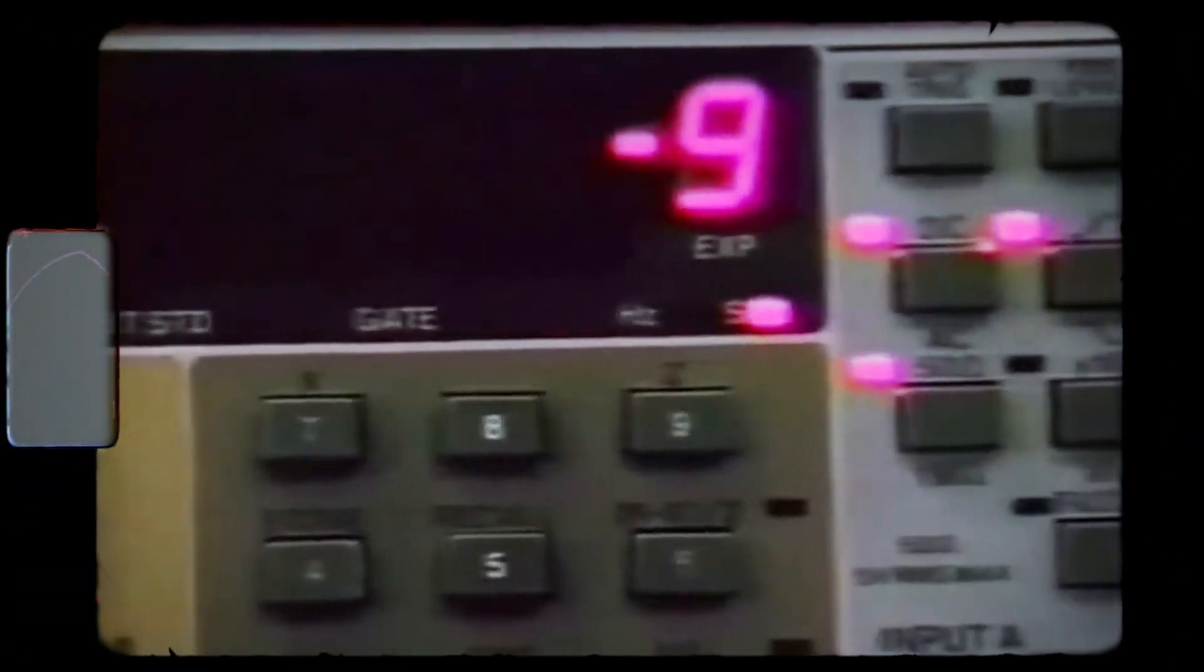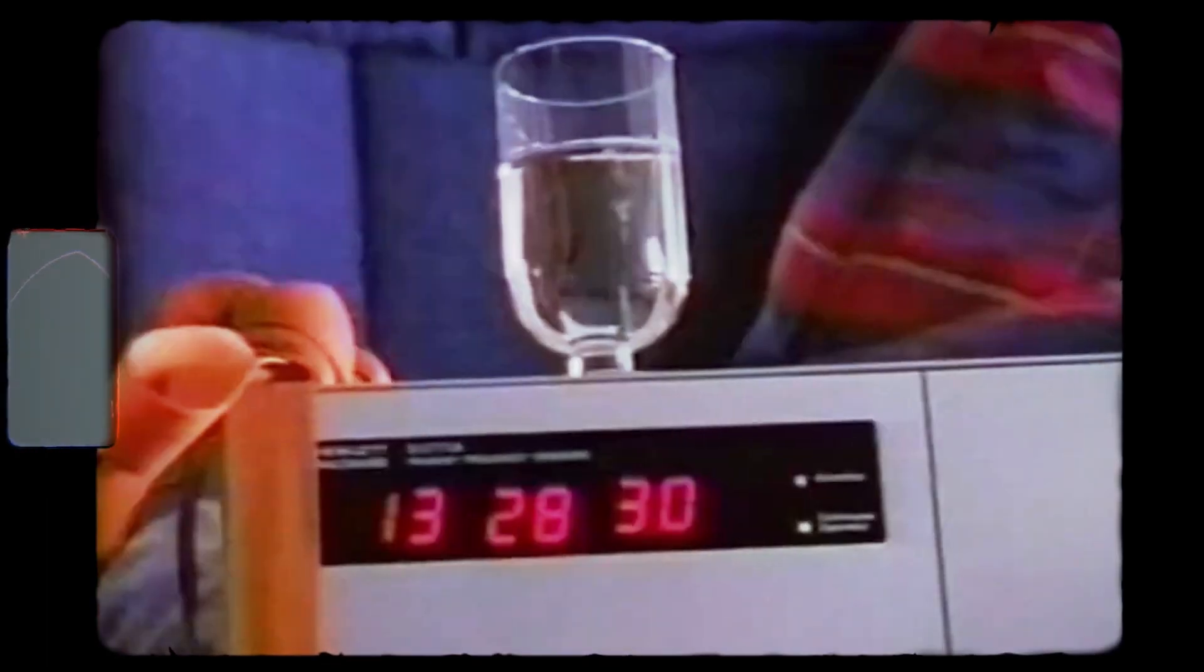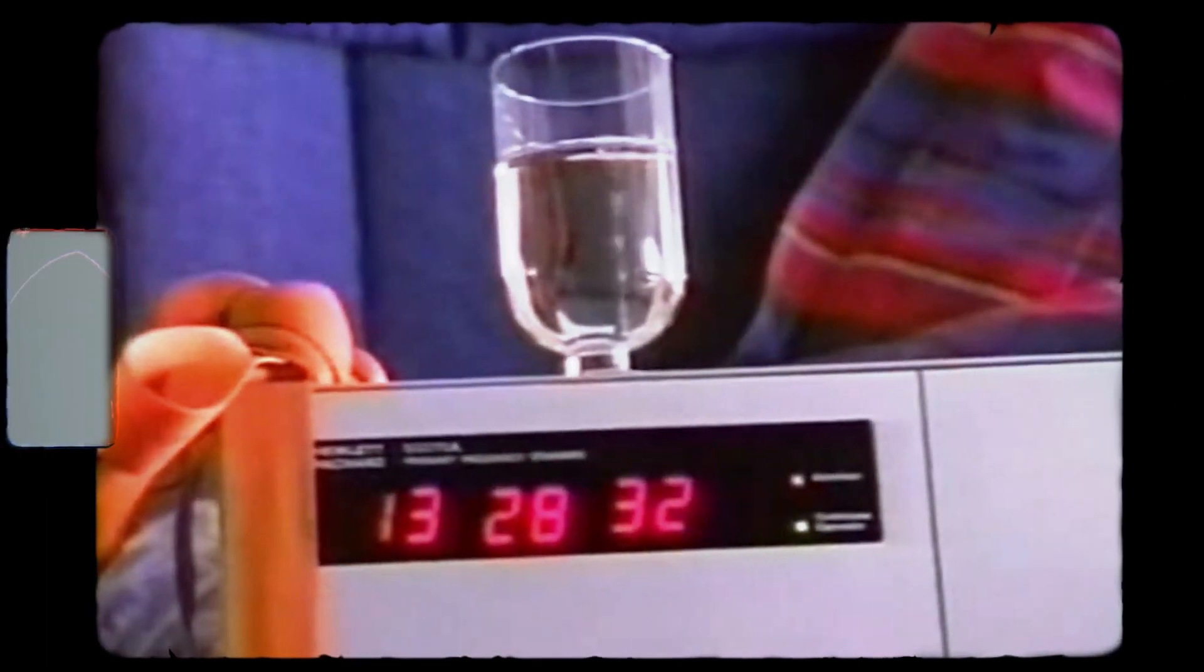In a practical demonstration of this concept, scientist Carol Alley's landmark 1975 experiment involved two precise clocks, one airborne and one stationary. After a period, the airborne clock lagged slightly, proving that time had slowed due to its increased speed relative to the clock on the ground.